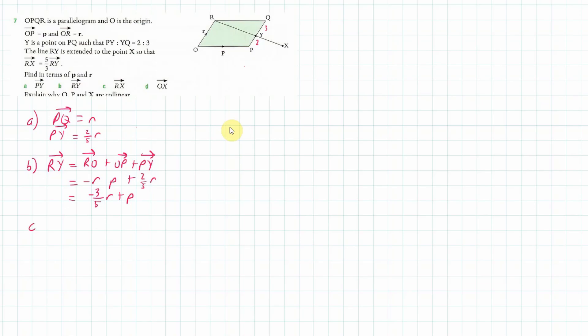Okay. Now C, R to X. Now we've got a piece of information here that RX is five thirds RY. Now we know what R is. So we're going to go five thirds times the previous question RY. What does this give us? Well, that will give us negative R, because five thirds times negative three over five is negative one, plus five thirds P.